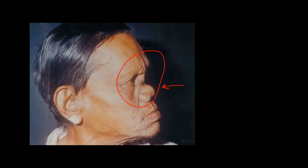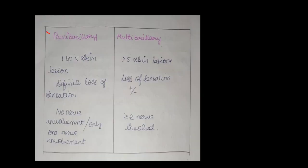This is another clinical picture showing saddle nose deformity seen in lepromatous leprosy. WHO classification: paucibacillary and multibacillary. You have to know the differences. Paucibacillary has one to five skin patches. More than five patches is multibacillary. Definite loss of sensation occurs in paucibacillary, but in multibacillary, loss of sensation may or may not be present. Nerve involvement in paucibacillary is only one nerve or no nerve. In multibacillary, they must have two or more nerve involvement.